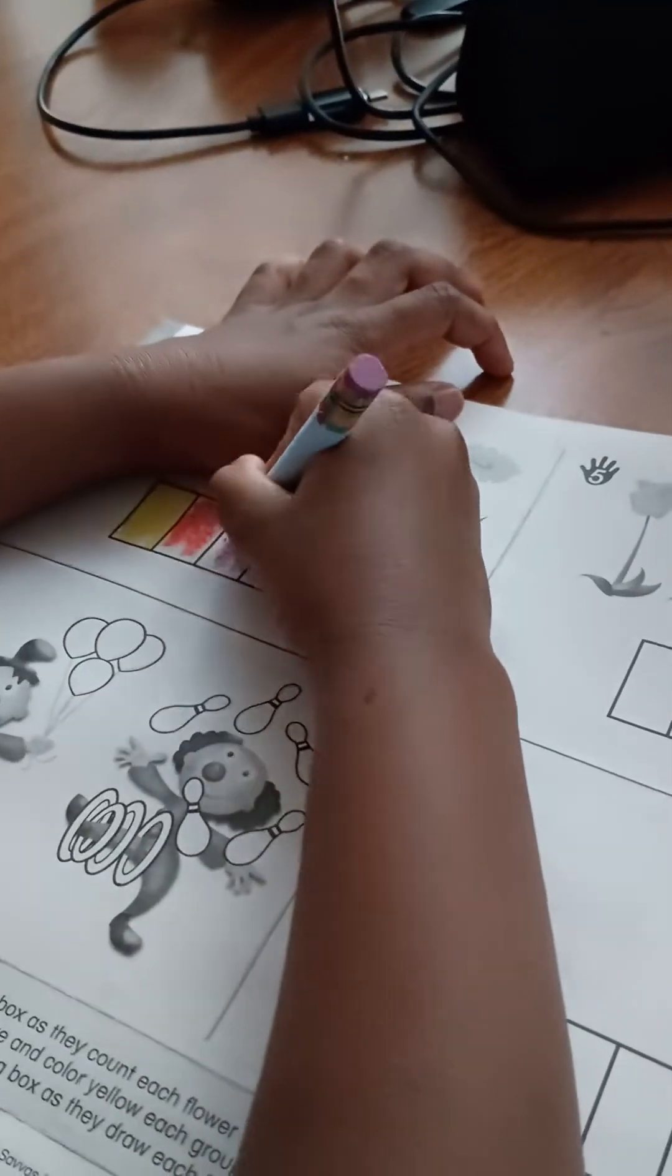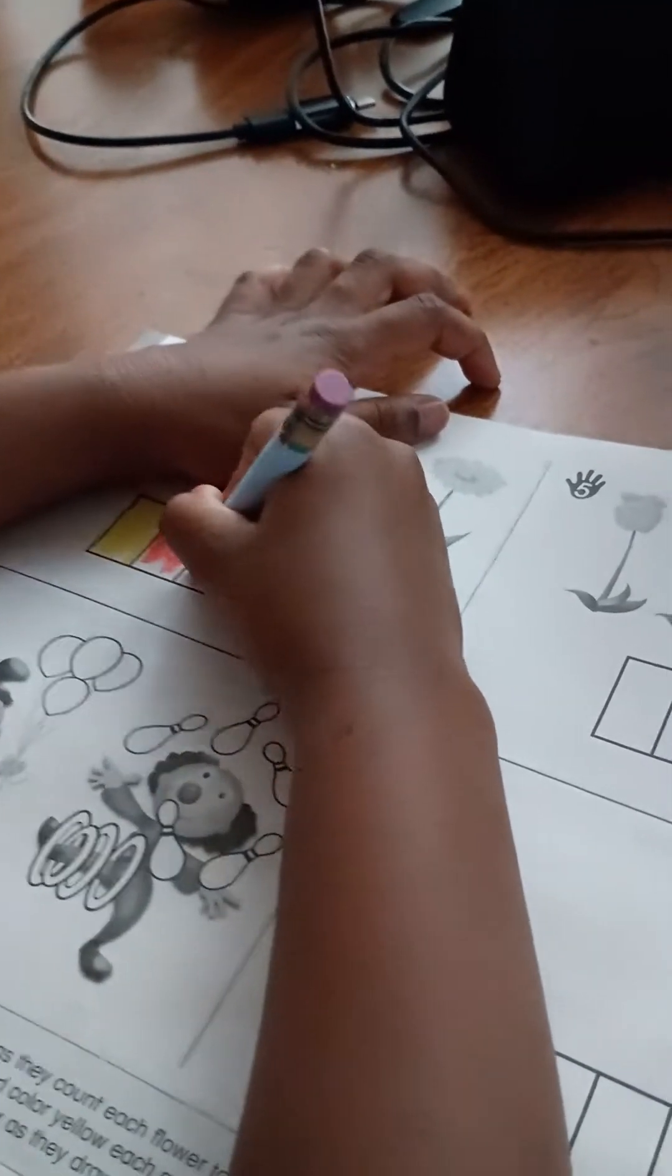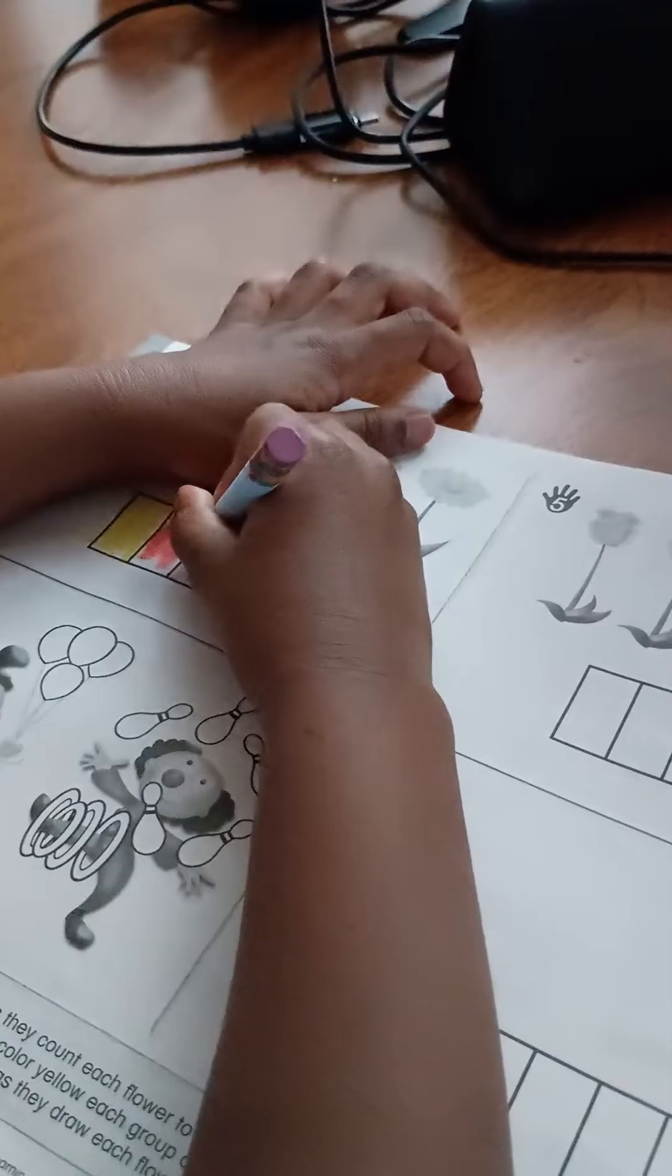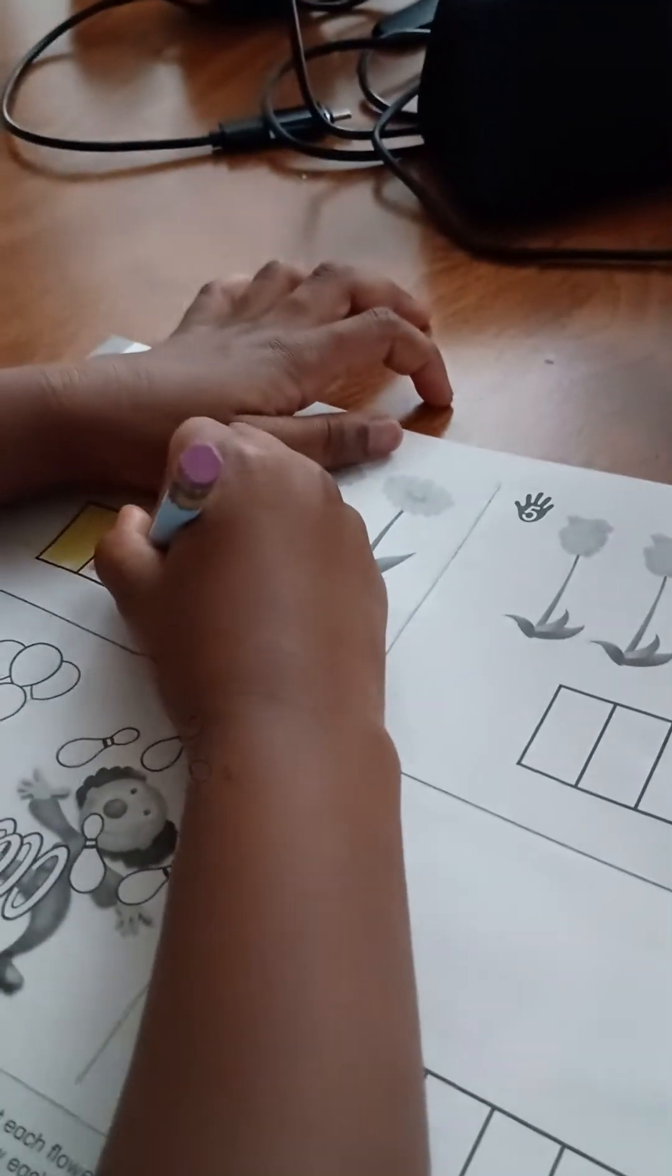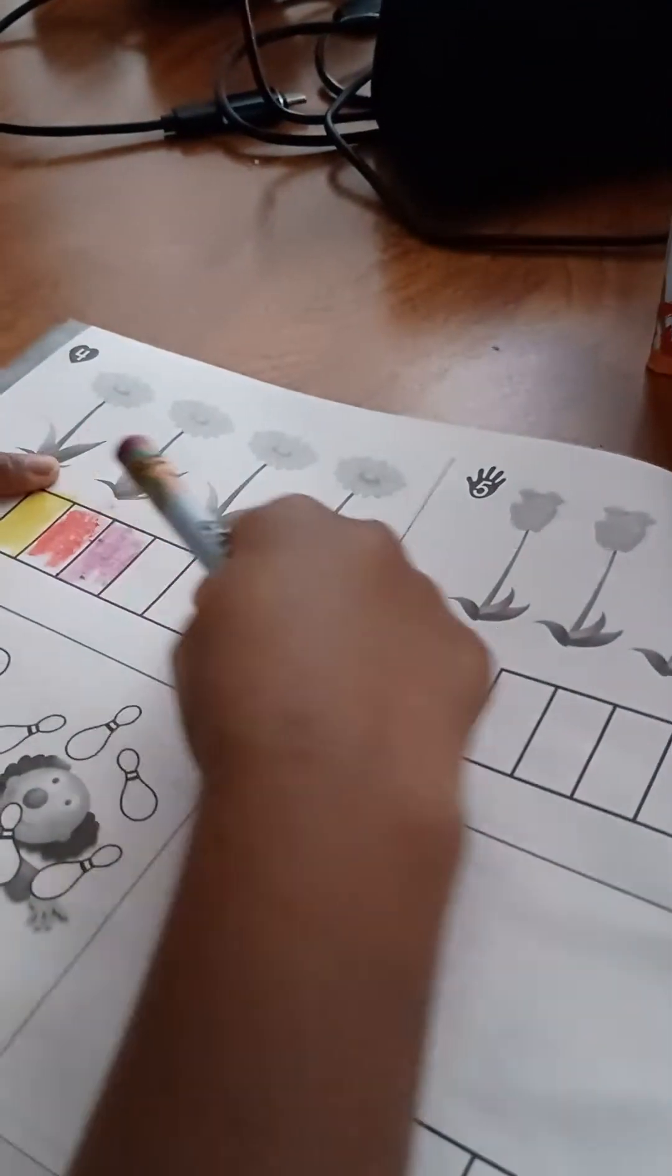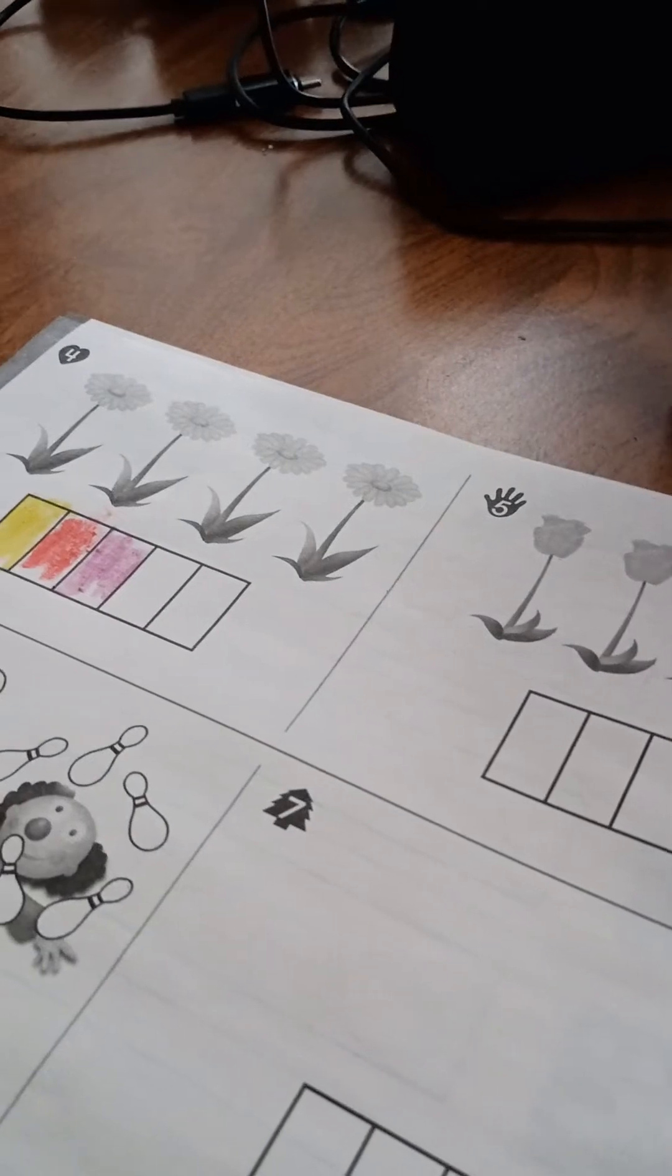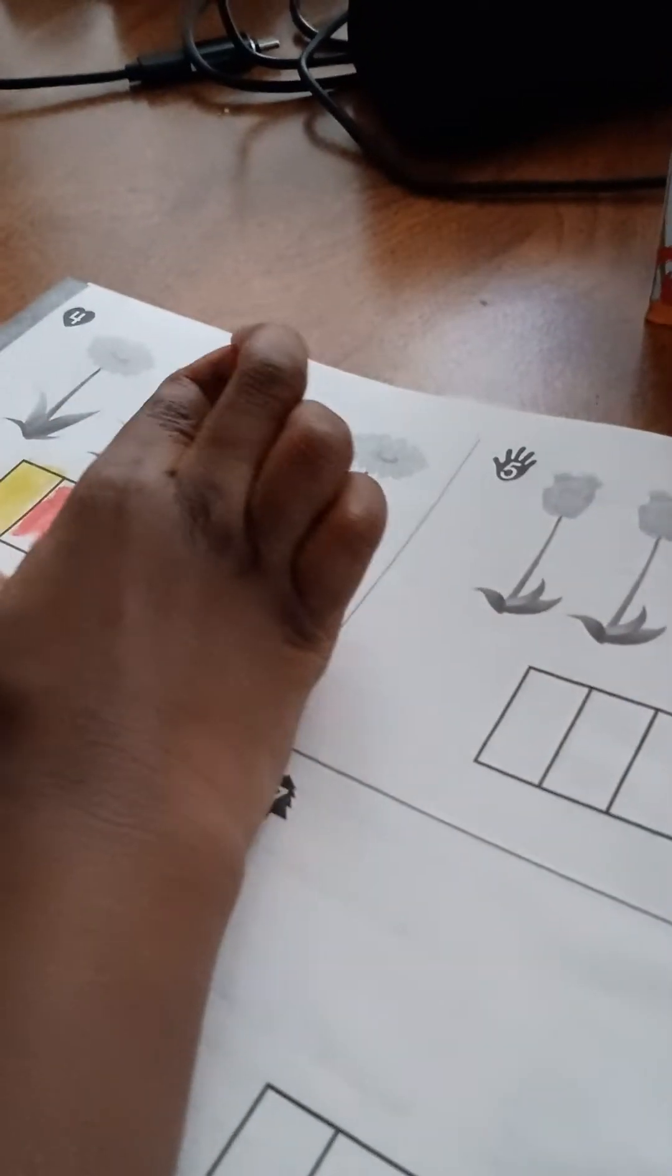That's three. How many are you supposed to color? Four. All right. How many you got left? Two. No. How many left you got? Well, you got two left, but how many you got left to color?